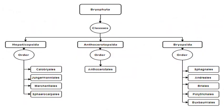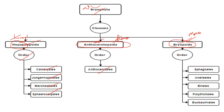The classification flowchart: Division Bryophyta is divided into three classes — Hepaticopsida (liverworts), Anthocerotopsida (hornworts), and Bryopsida (mosses). Hepaticopsida is divided into orders: Calobryales, Jungermanniales, Marchantiales, and Sphaerocarpales. Anthocerotopsida has a single order: Anthocerotales. Bryopsida has orders including Sphagnales, Andreales, Bryales, Polytrichales, and Buxbaumiales.